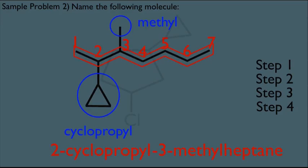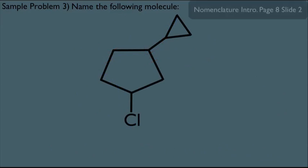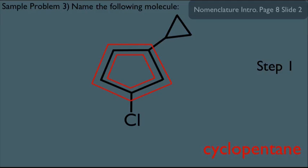What if your molecule has two rings in it? For step one, we choose the bigger ring as the main show and treat anything else as a substituent. So the five-membered ring defines the parent name, which is cyclopentane.